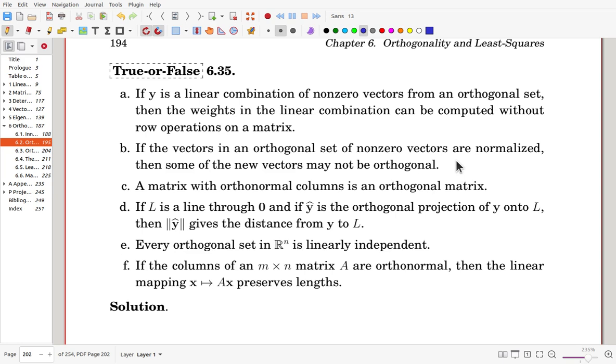A matrix with orthonormal columns is an orthogonal matrix. Is it true? It's not true. Now why is it not true? Orthogonal matrix is requiring orthonormal columns and another one is a square matrix. So if it is not a square matrix, then it is not an orthogonal matrix. So the given statement is wrong.